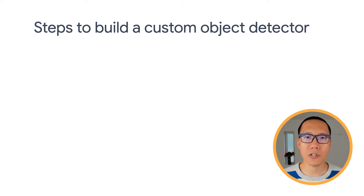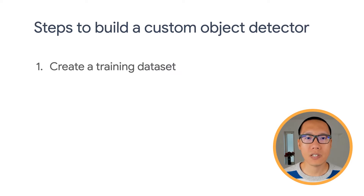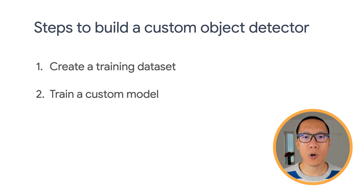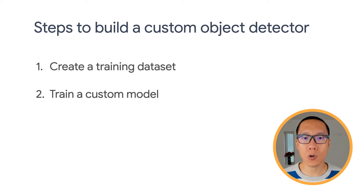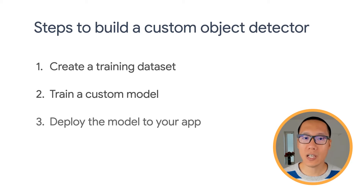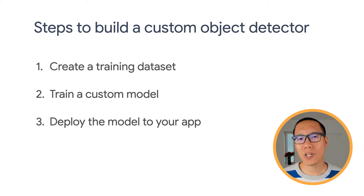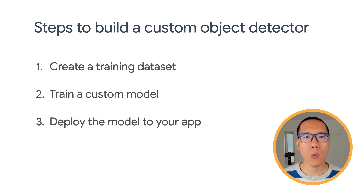That's why you need to train and deploy a custom model. There are three steps that you need to do. First, collect your training images and label them. Second, train a custom model using TensorFlow Lite Model Maker, which is a Python library that allows you to train machine learning models in just a few lines of code, and there's no machine learning expertise required. Then finally, deploy the custom model to your Raspberry Pi — you just replace the pre-trained model from the first video with the custom model you're going to train now.